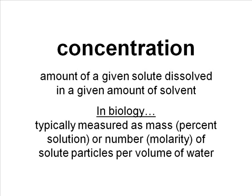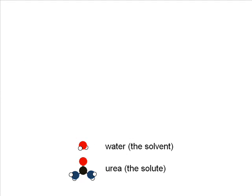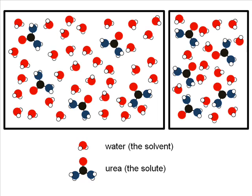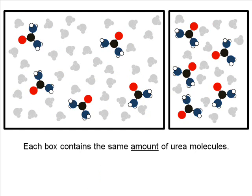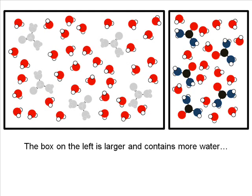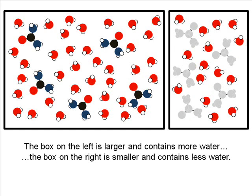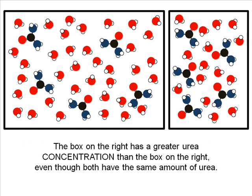The easiest way to understand this very important concept is to look at an example. We're going to use water as the solvent and urea as the solute. Here we have two boxes of water and urea. If I dull out the water, notice there's the same amount of urea — five molecules in each box — but there's not the same amount of water. The first box has much more water than the second box relative to urea. Even though both boxes have the same amount of urea, the concentration of urea in the box on the right is greater because there's more solute in a smaller volume of solvent. It's got a higher concentration.